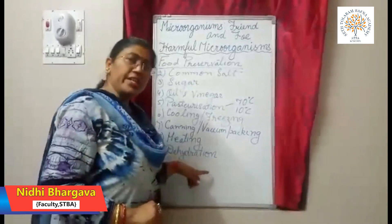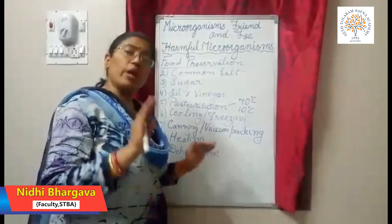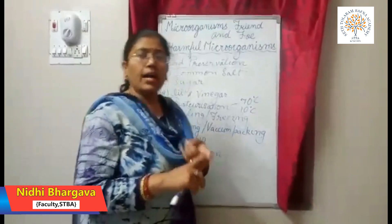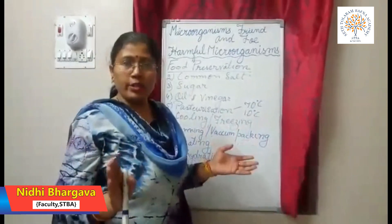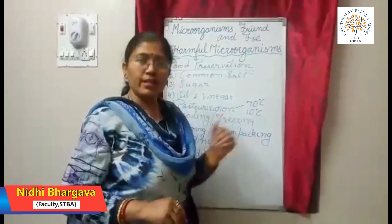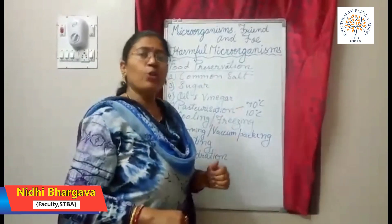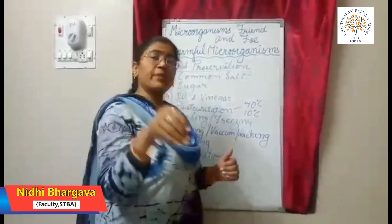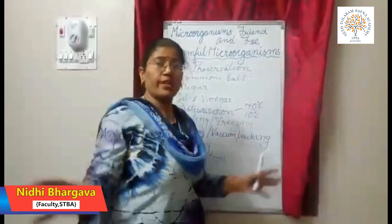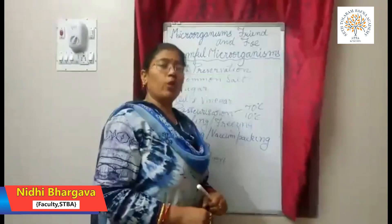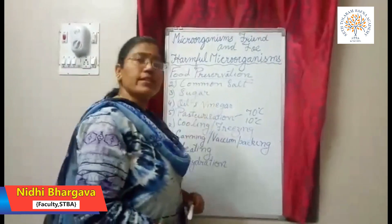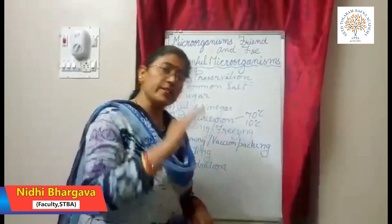The next method is dehydration, which means the removal of moisture from food. Wheat, rice, and pulses are exposed to sunlight to remove moisture and preserve them. For example, when making potato chips at home, the potatoes are dipped in boiled water, flattened, and then exposed to sunlight to remove moisture — that process is called dehydration. These are the various methods by which food preservation is done.